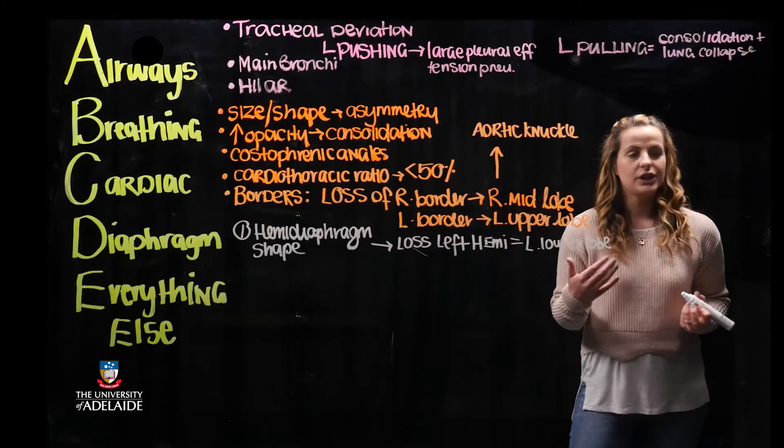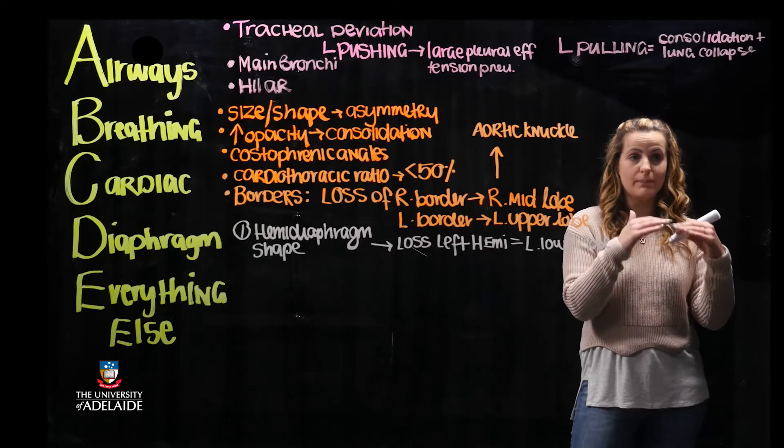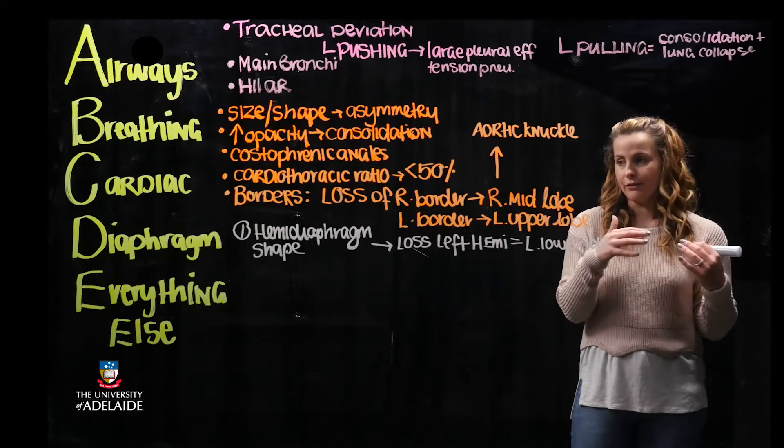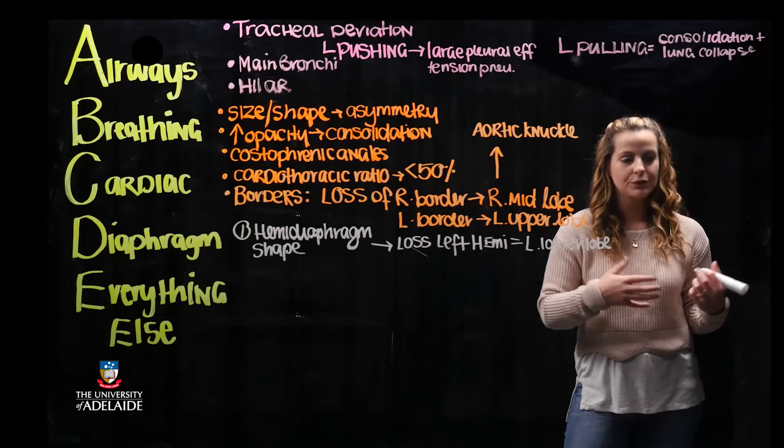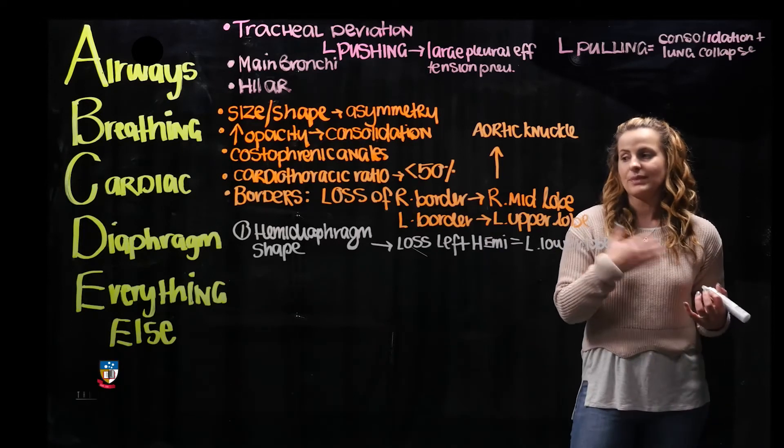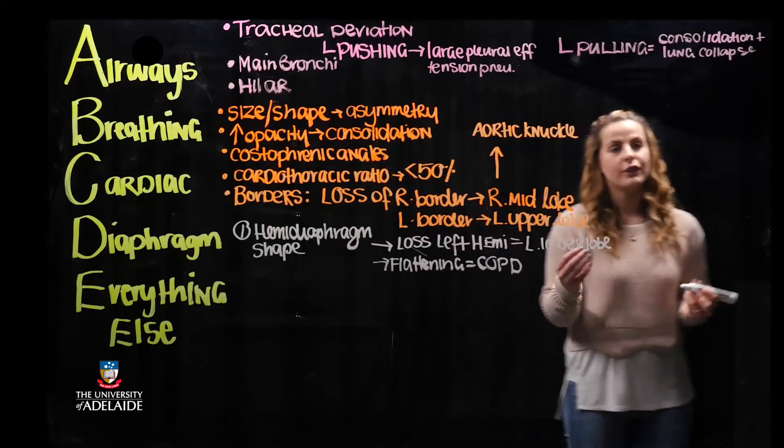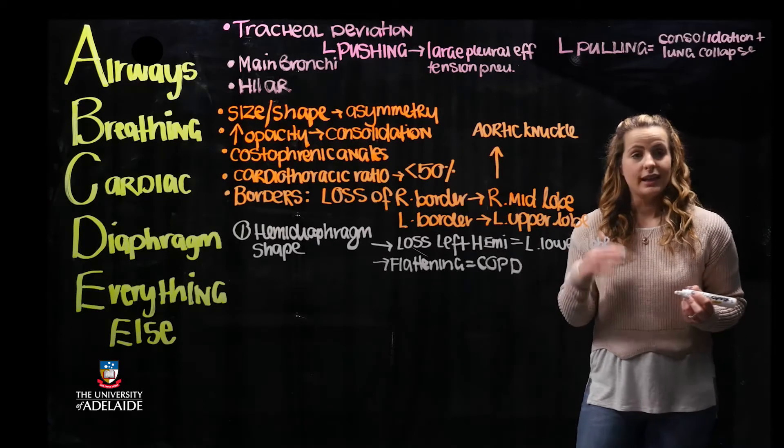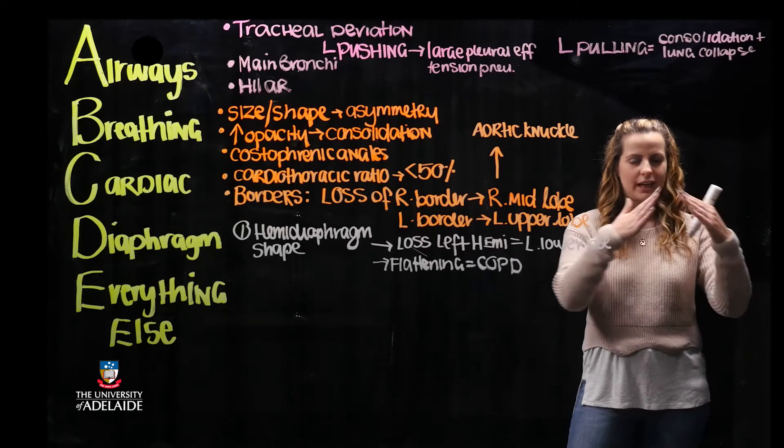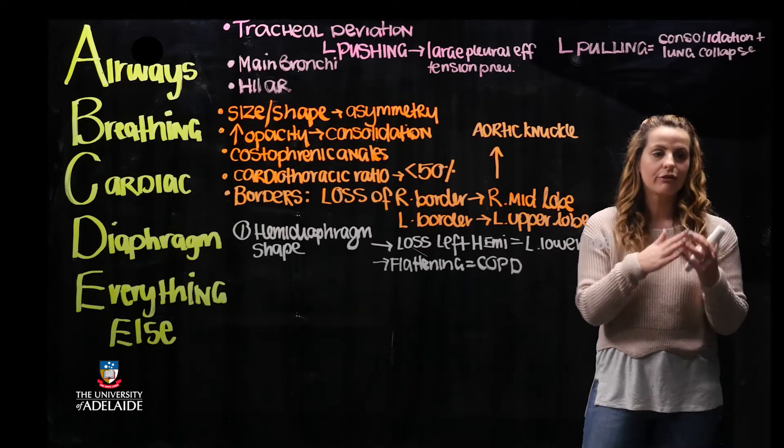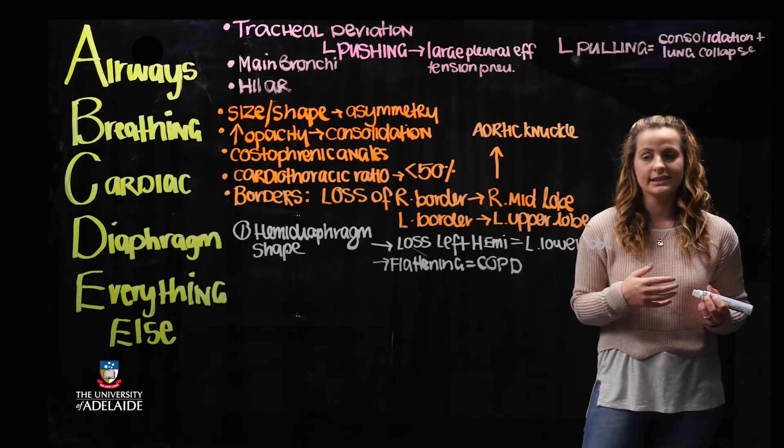Secondly, what the shape can tell us: if you have a bilateral flattening of the left and right diaphragm, this is typically indicative of an enlarged volume in the lung tissue, which can be suggestive of COPD or asthma. Conversely, if you have unilateral flattening or a tent-shaped increase in one side of the diaphragm, this is suggestive of tension pneumothorax in one of the lungs.